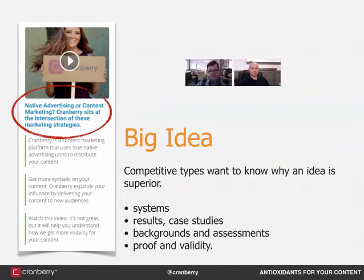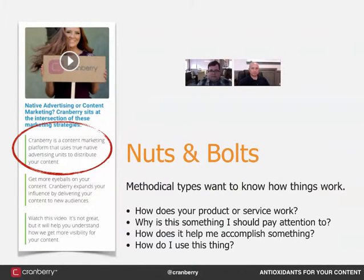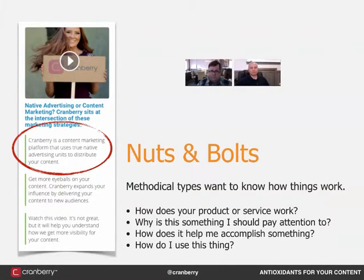What are the nuts and bolts? Methodical types want to know how things work. They want to dissect things — how does a product or service work? Why should I be paying attention to this? How does it help me accomplish something? How do I use this thing? They want to get into the nitty gritty and know how you're accomplishing what you claim to accomplish. For Cranberry: 'Cranberry is a content marketing platform that utilizes true native advertising units to distribute your content.' That tells them how we do it — we use native advertising to distribute content, taking your content and rolling it into a native format.